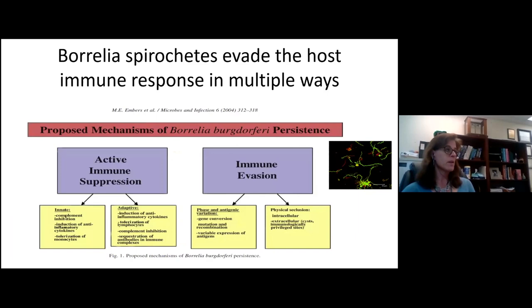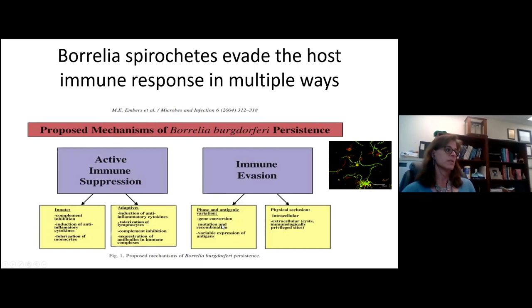Borrelia spirochetes are able to evade the host immune response in many different ways. They can engage in physical seclusion and in both phase and antigenic variation. There is variable expression of antigens throughout the course of infection. There is an antigen called VlsE that engages in gene conversion, mutation, and recombination, effectively outrunning the antibody response. Borrelia can also engage in active immune suppression.